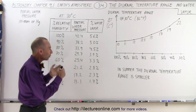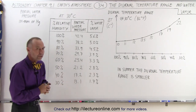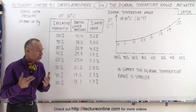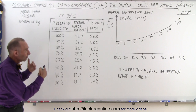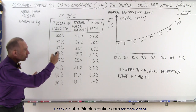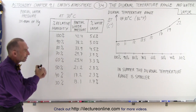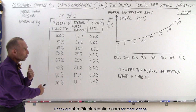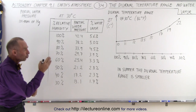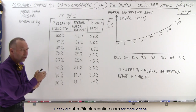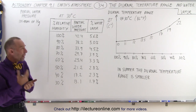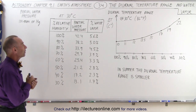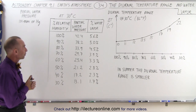What we're going to do here is show you a table and a graph that exemplifies the differences in the diurnal temperature range due to the various amounts of water vapor in the atmosphere.